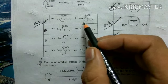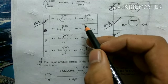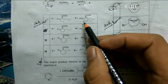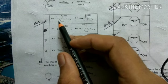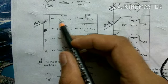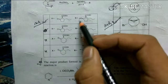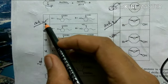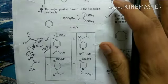Sodium cyanoborohydride at pH 4 is a very weak reducing agent and acts as a chemoselective reagent, reducing only the most electrophilic group. In this case, it selectively reduces the keto group in the presence of an ester. This chemoselective reduction gives option 1 as the correct answer.